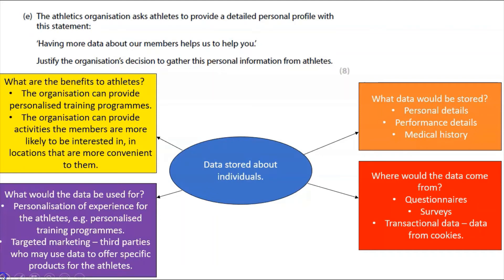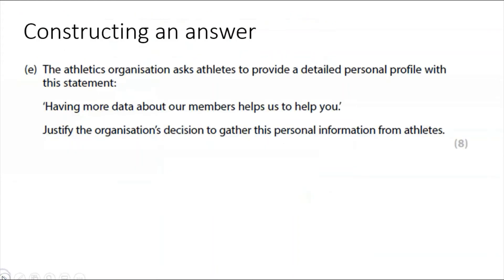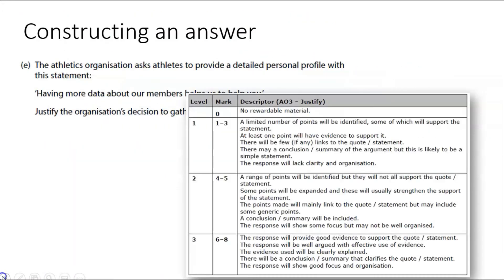The benefits to the athletes are that the organization can provide personalized training programs, activities members are more likely to be interested in, and locations more convenient to them — because we know data about where they live. I'm going to construct an answer from my plan, taking each point and thinking about the level descriptors. A03 — justify — is what we need to do, so I've planned to show good focus and a well-argued response.